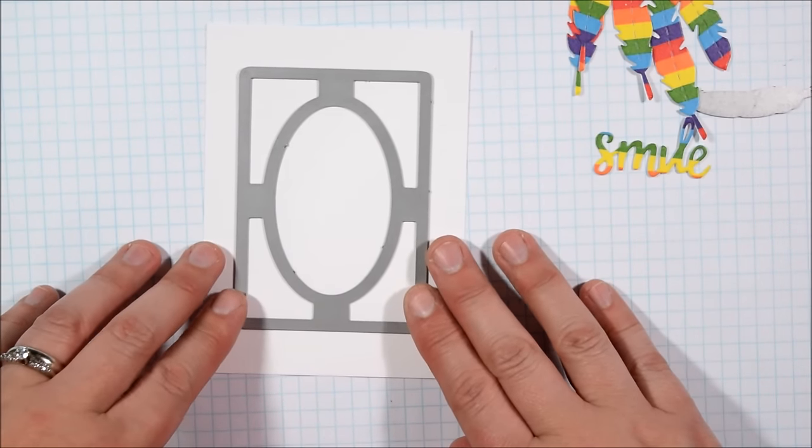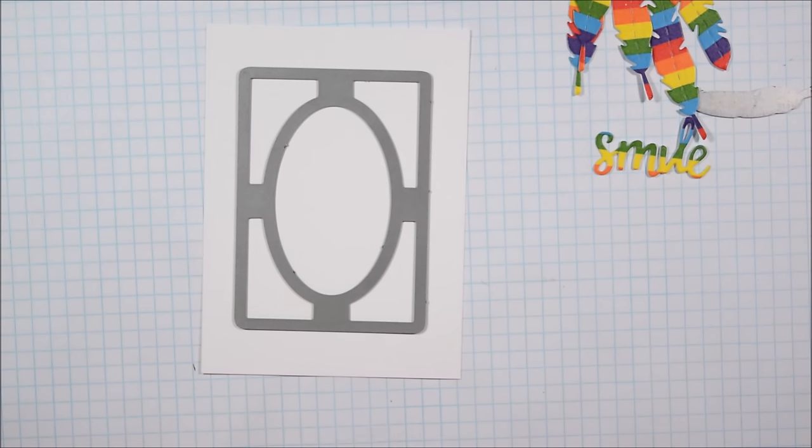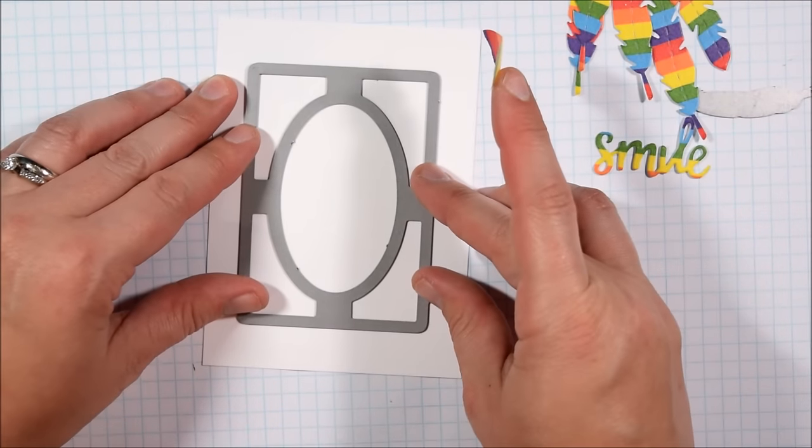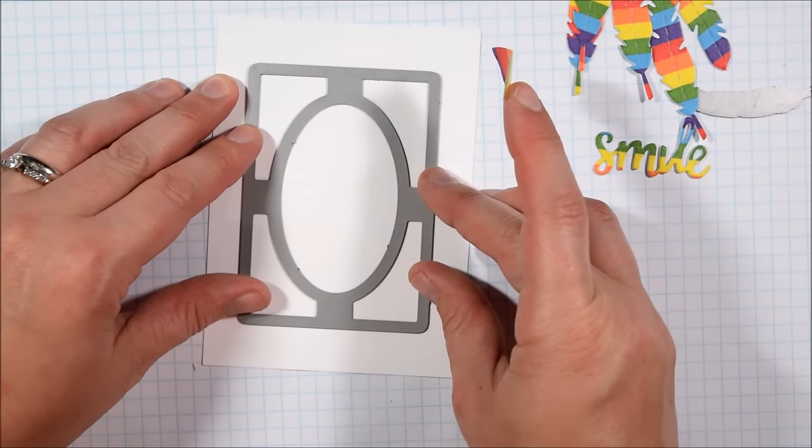A set of coordinating dies actually, so even though it's for a stamp set, you don't cut out a stamp that says smile, it just cuts out the word smile. And again I'll leave you a link to that in the video description.